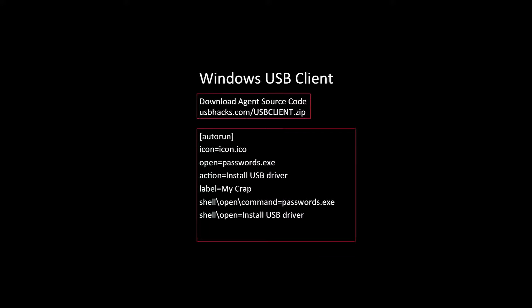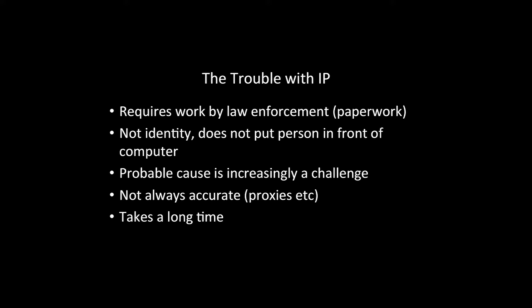I would also rely on social engineering — making the file look like a password file, or in the case of the thermal imaging camera, making it look like a thermal image of a cat. However, there were some issues when deploying this tool: a lot of this relies on IP address, and there are many problems with that, increasingly so for forensics. It requires a lot of work by law enforcement, and sometimes law enforcement doesn't like to do a lot of paperwork.